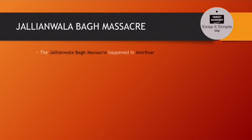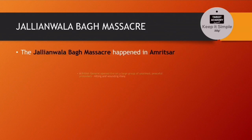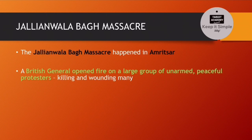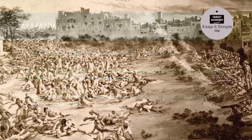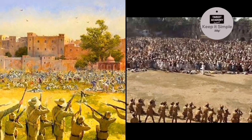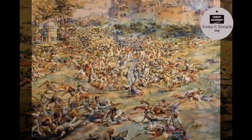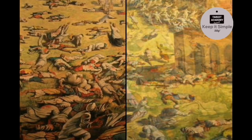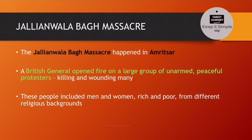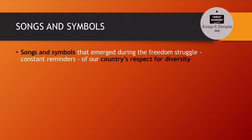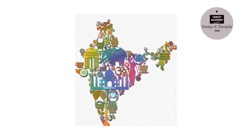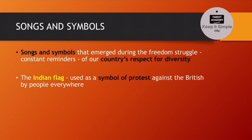Jallianwala Bagh massacre एक बहुत ही sad event है जो Amritsar में हुआ था। वहाँ पे अलग-अलग region, religion, cultural background, economic background के men and women peacefully protest कर रहे थे Britishers के against। उनके पास कोई भी weapons नहीं थे, फिर भी एक British general ने उन पर fire open कर दिया और उनमें से कई सारे लोगों की death हो गई और काफी injured हो गए। ये Indian freedom movement का एक बहुत ही sad event था, और उन लोगों की memory में Indian People's Theatre Association ने एक बहुत ही खूबसूरत song compose किया था।